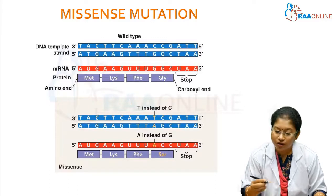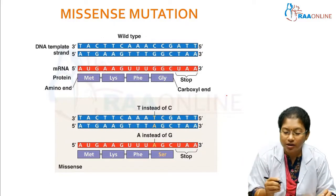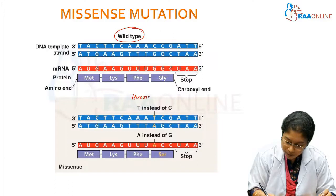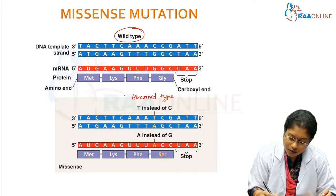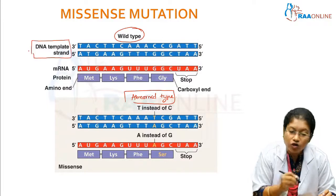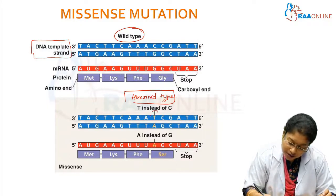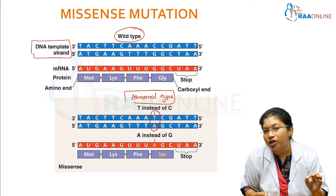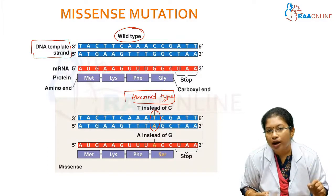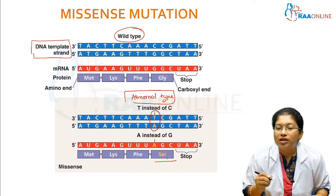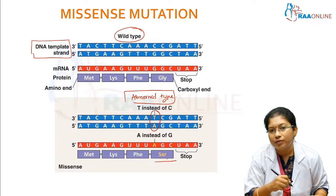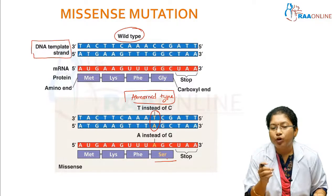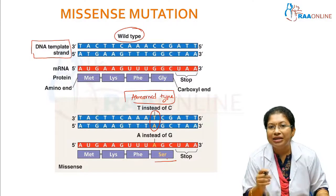What is missense mutation? In missense mutation, you can see a wild type and an abnormal type. The DNA sequence is normal in the wild type, whereas a single base is changed in the abnormal type. That single base change causes a serine amino acid to be produced in place of glycine — a substitution of one amino acid by another. This is called missense mutation.